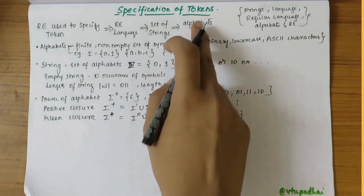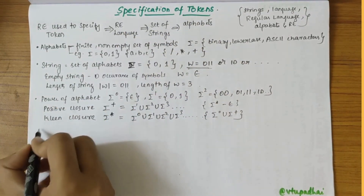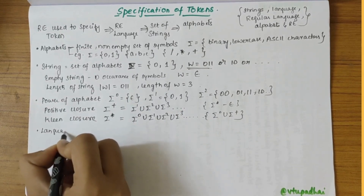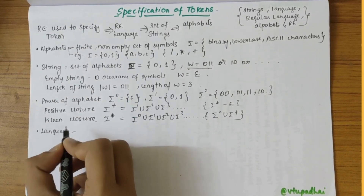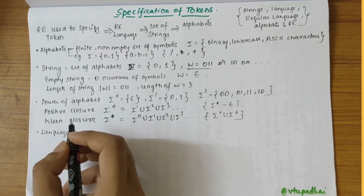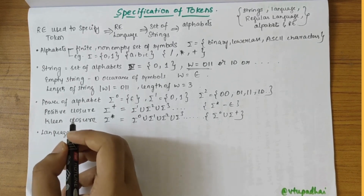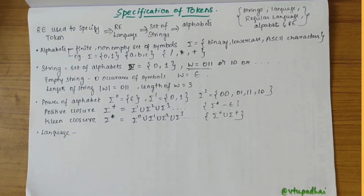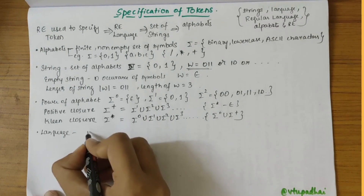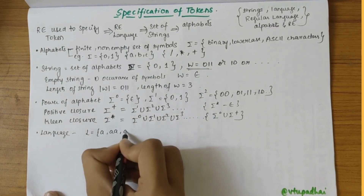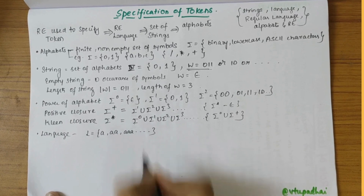Now we are done with alphabets and strings; let's look into language. Language is a set of strings obtained from an alphabet, denoted by L with Sigma. For example, a language comprising one or more a's could be written as L = {a, aa, aaa, aaaa, ...} and so on.